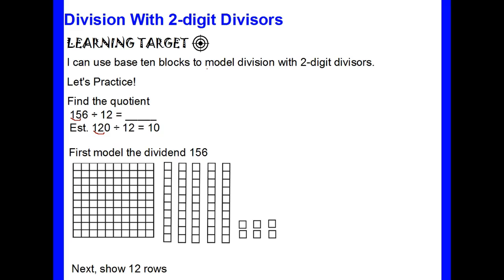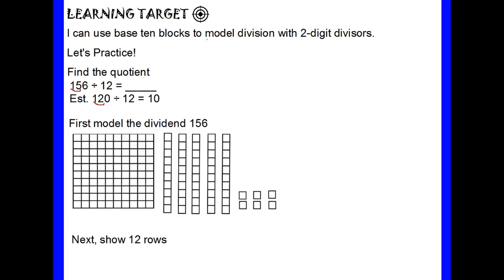The first thing that you're going to want to do when you are showing this as a model is to model the dividend, so that's going to be our first step. Here you can see the model of the dividend, and then you have the flat, your five longs, and then your six units for 156.